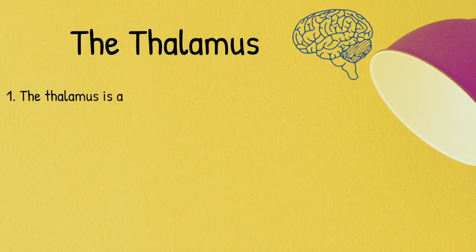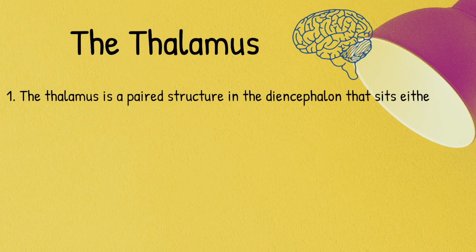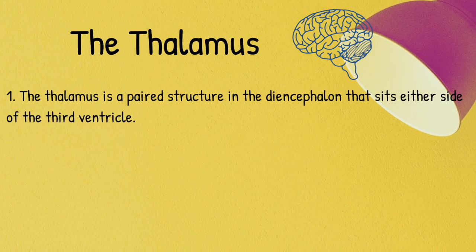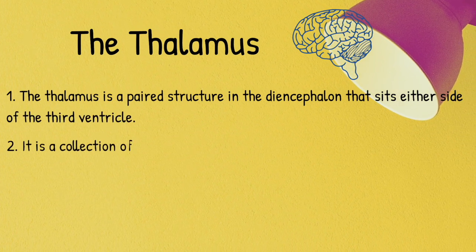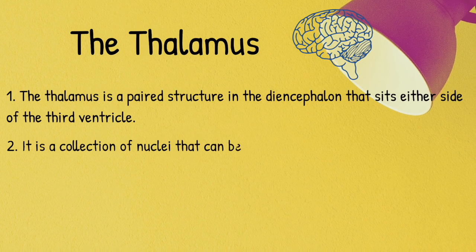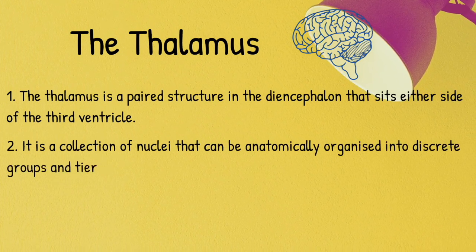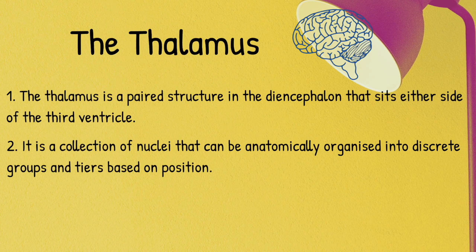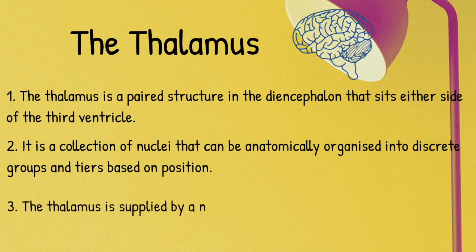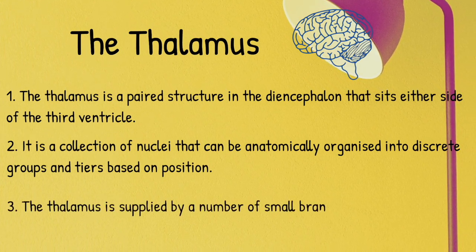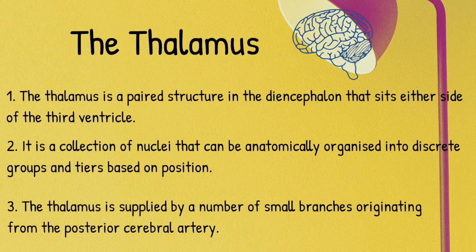The thalamus is a paired structure located in the diencephalon that sits either side of the third ventricle. It is a collection of nuclei that can be anatomically organised into discrete groups and tiers based on position. The thalamus is supplied by a number of small branches originating from the posterior cerebral artery.